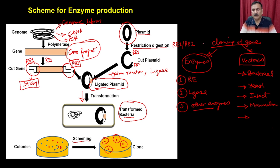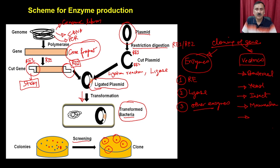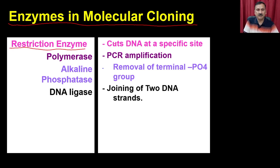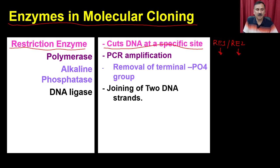Before getting into the details of cloning a gene into a suitable vector, we need complete information about these enzymes and the different types of vectors available. The enzymes used in molecular cloning include restriction enzymes, whose purpose is to cut DNA at specific sites. For example, restriction enzyme 1 and restriction enzyme 2 are each specific for their own recognition sequence.